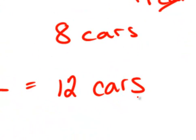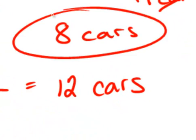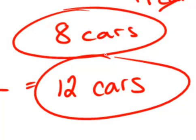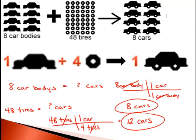So if we look at our 2 products, 8 cars or 12 cars, we're going to run out of car bodies before we run out of tires. So this means that we'll only be able to make 8 cars, and then we're going to have some tires left over.